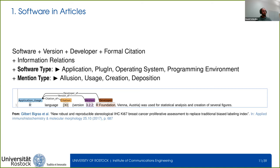Creation and deposition are cases where new software was developed as part of the research, with the difference that a deposition also means the software was published. In this case we would classify R as software type 'application' and mention type 'usage.'